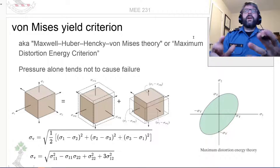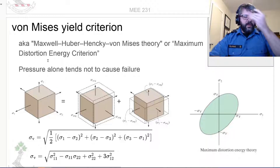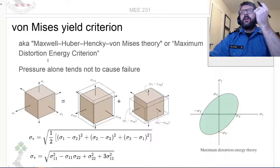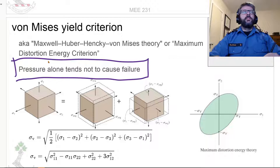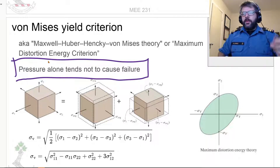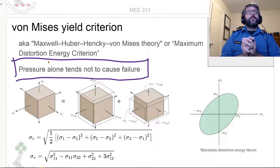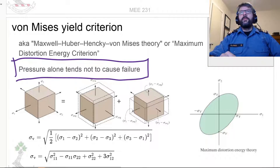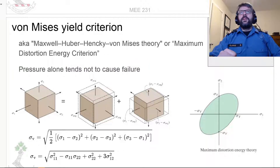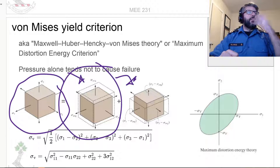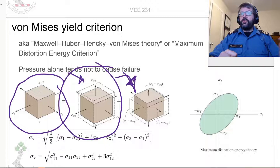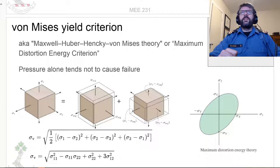Another description of this is the maximum distortion energy criterion. When I say distortion energy, that's changing the shape of the element — shape, not size. Basically, pressure alone doesn't cause failure. If you throw this thing to the bottom of the ocean and put pressure on it, it will shrink in size but it won't yield. So the idea is that you can break the stresses applied to an object into average stresses and distortion stresses, and the average stress doesn't affect yielding, whereas the distortion energy does.